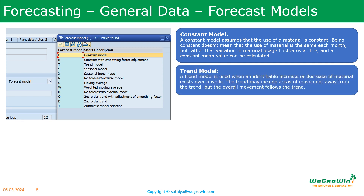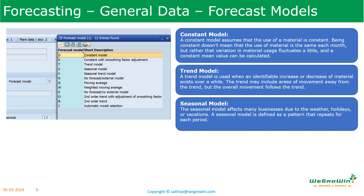A trend model is used when there is an increase or decrease in material consumption. The trend may include areas of movement away from the trend, but the overall movement follows a downward or upward trend. A seasonal model affects many businesses due to weather, holidays, or vacations. It is defined as a pattern that repeats each period — for example, an annual seasonal pattern has a cycle 12 periods long if the periods are months. A seasonal model may apply to a company that makes ice cream, which experiences greater demand in summer, and this pattern repeats each year.